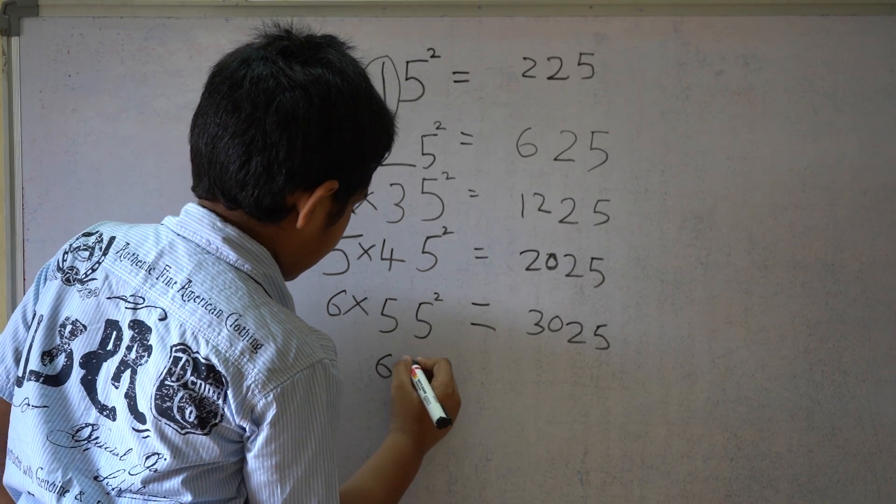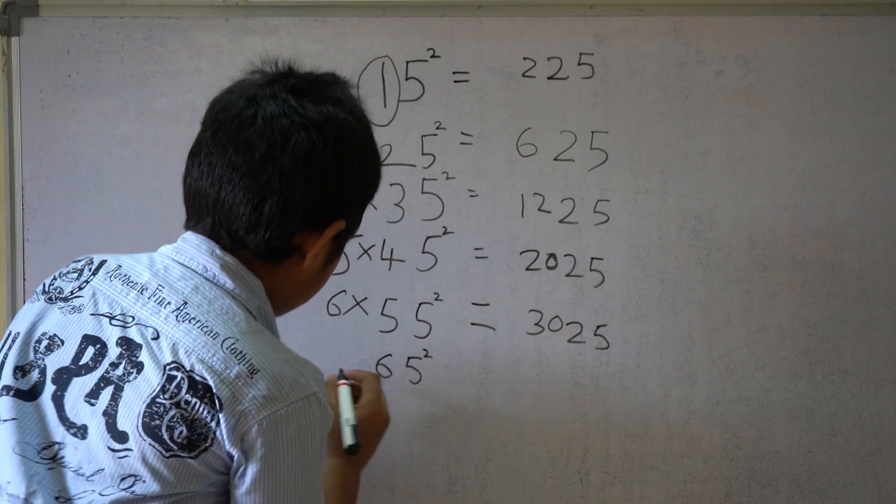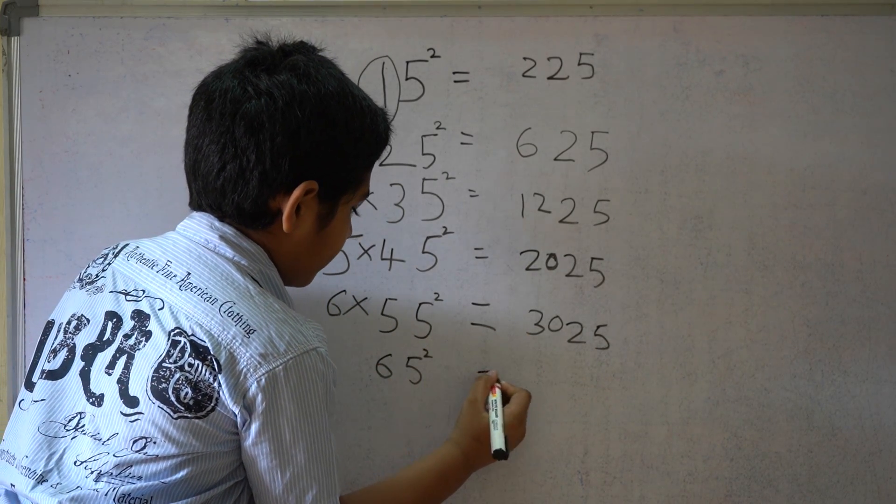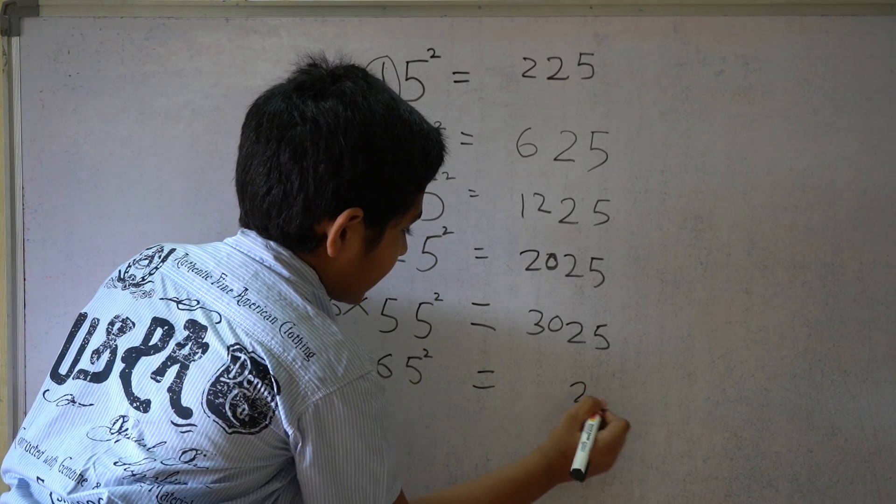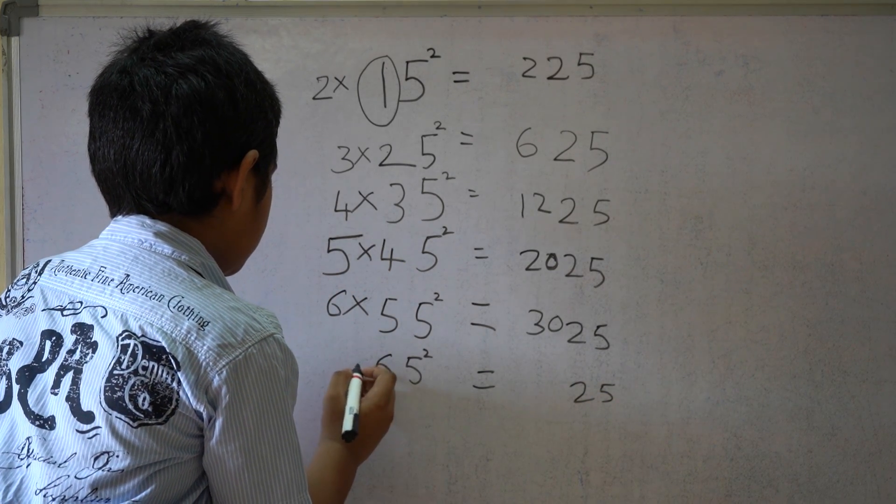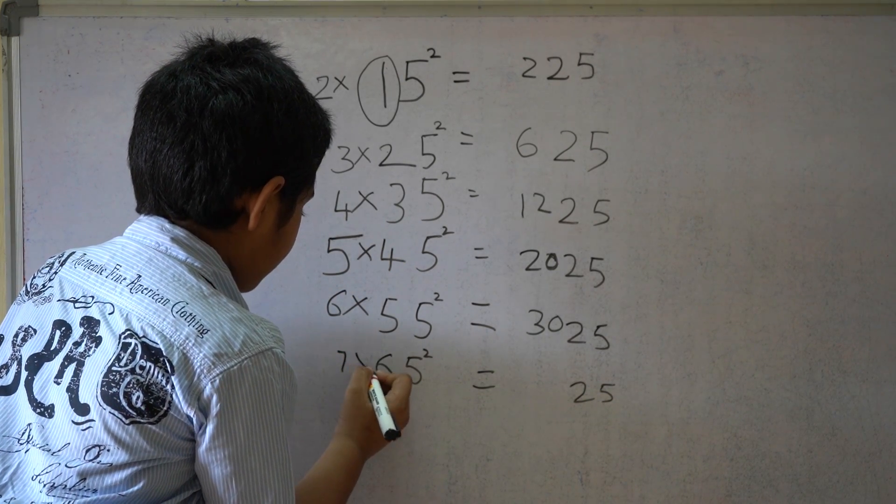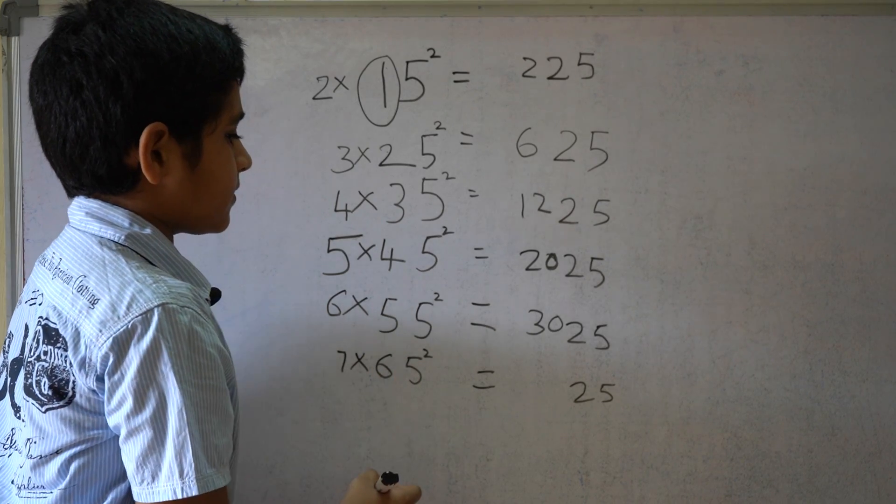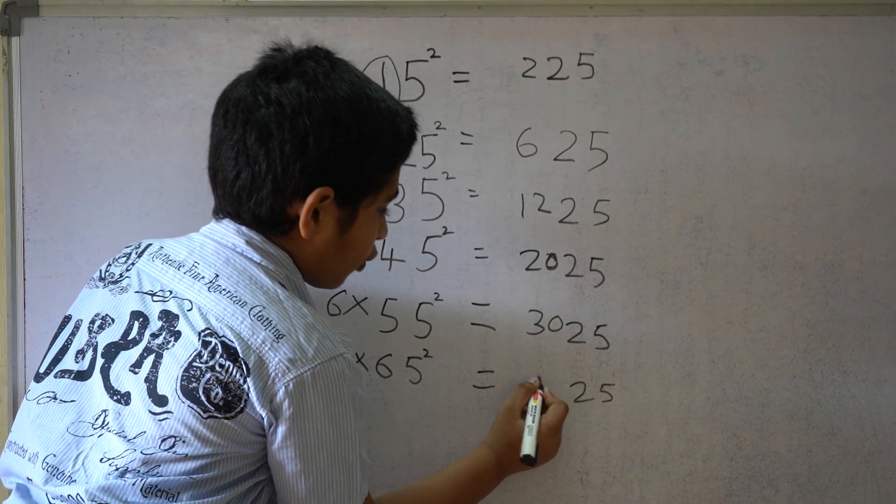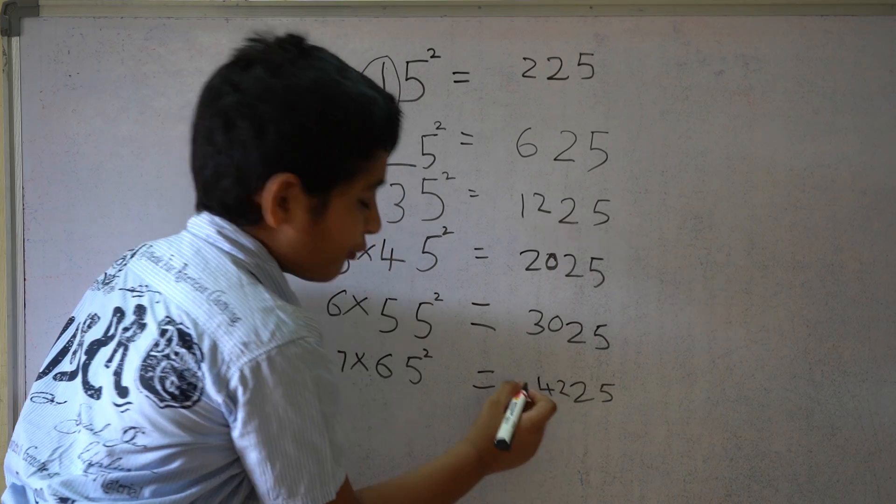65 square. 5 square equals 25. 6 times the next natural number 7 equals 42. So 4225.